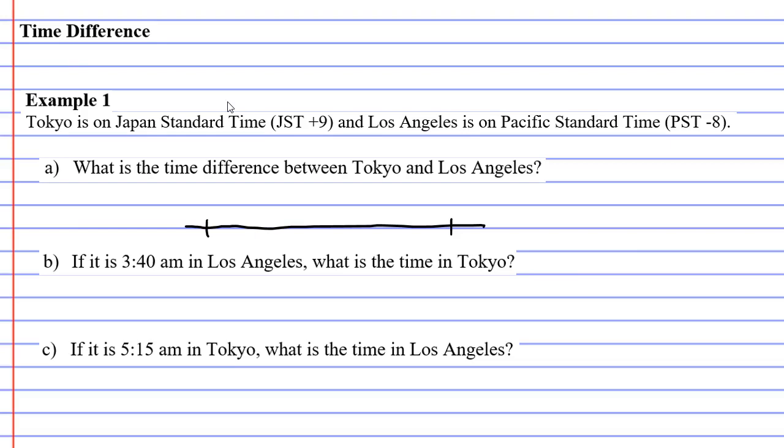Now, Japan Standard Time is +9, so we're going to put that on the right side. We're just going to write +9. We really don't need the JST part. And Pacific Standard Time is -8, so we're going to put our -8 there. And we also want to put a mark where UTC is, and that's basically the 0.